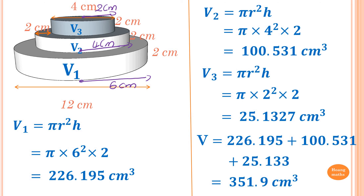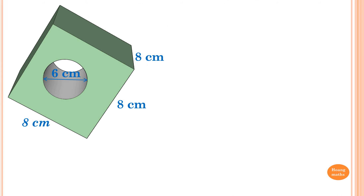Please try to pause the video and do it yourself if you can. What we have here is a cube and a cylinder. To find the volume of this solid, we find the volume of the cube and then subtract the volume of the cylinder.